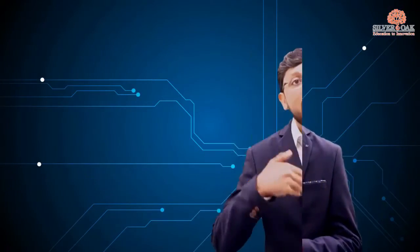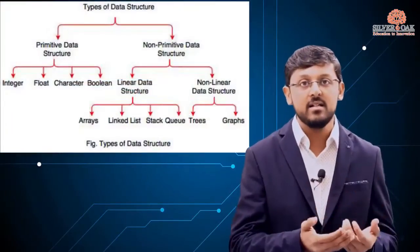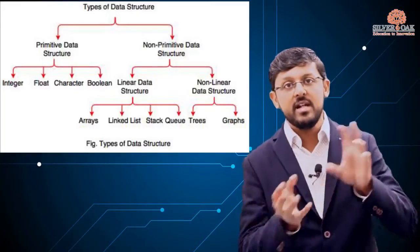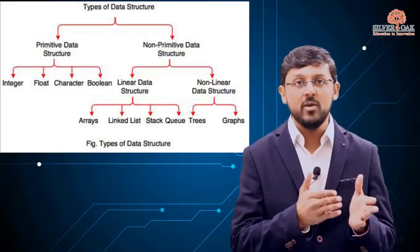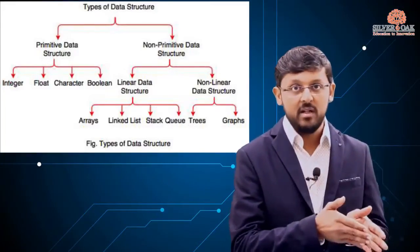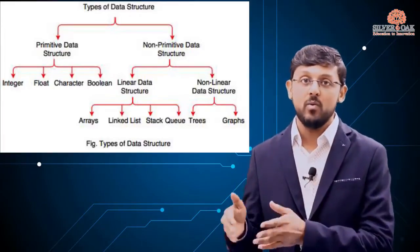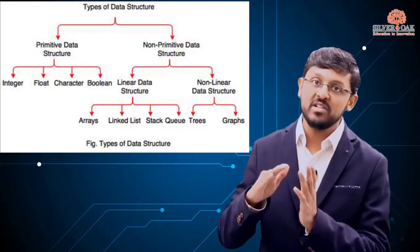Primitive data structures are inbuilt, meaning the machine already understands them, like integer, float, and character. Non-primitive data structures are derived from primitive ones. Primitive types require no special code to implement, while non-primitive structures require some special code.